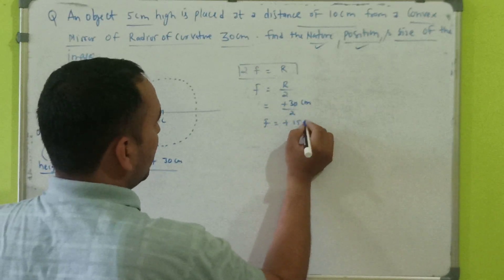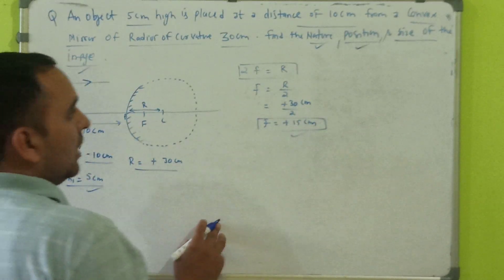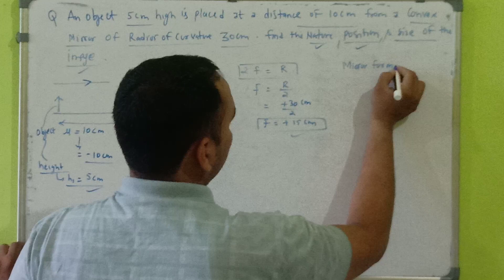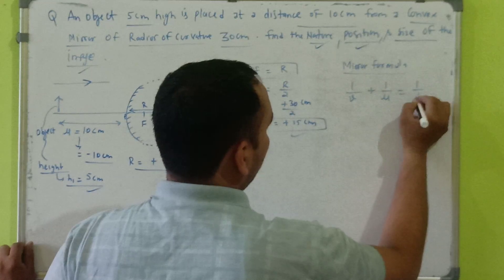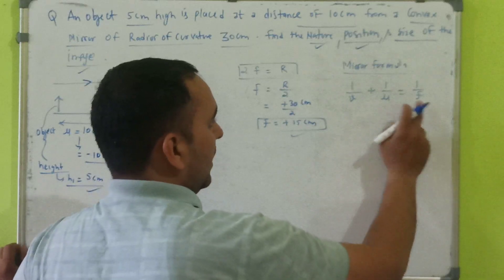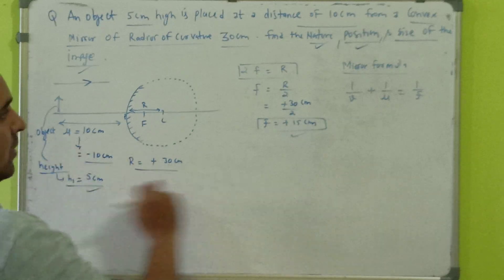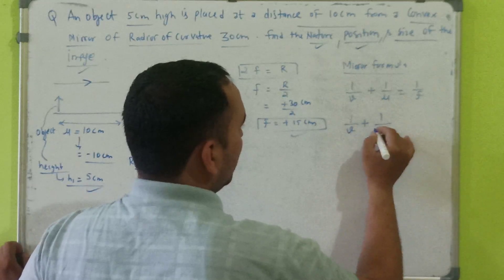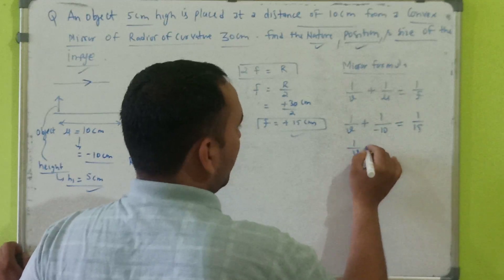The focal length is plus 15 centimeters. Now we apply the mirror formula: 1/v plus 1/u equals 1/f, where v is the image distance, u is the object distance, and f is the focal length. We have u and f but not v. So: 1/v plus 1/u, that is 1 upon minus 10, equals 1 upon 15. Rearranging: 1/v equals 1/15 plus 1/10.